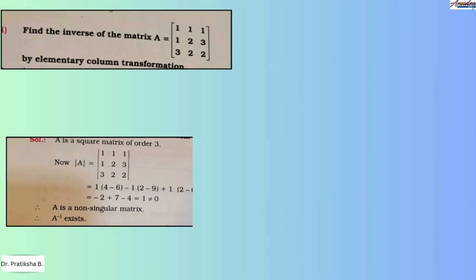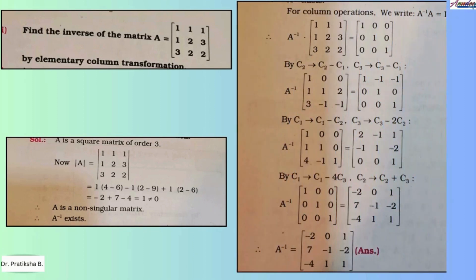In this question, you have been asked to find the inverse of a 3x3 matrix by elementary column transformation. When finding the inverse of a matrix, it is mandatory to first check if the matrix is non-singular. The determinant of matrix A comes out to be 1, which is not equal to 0. Using the formula A inverse × A = I, our job is to reduce matrix A into the identity matrix and perform the same column operations on the identity matrix. By doing all these operations, reducing A to the identity matrix, we get A inverse equal to [-2, 0, 1; 7, -1, -2; -4, 1, 1].